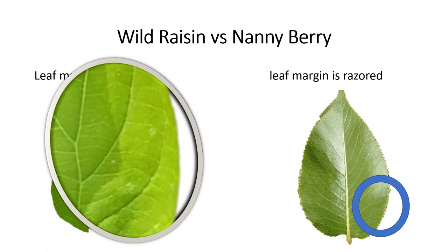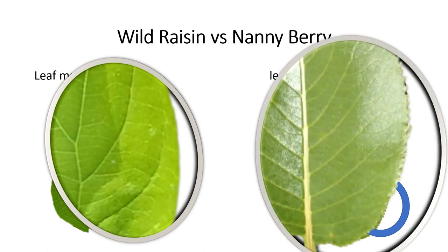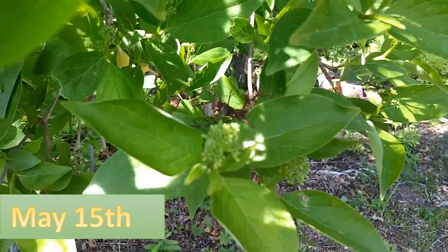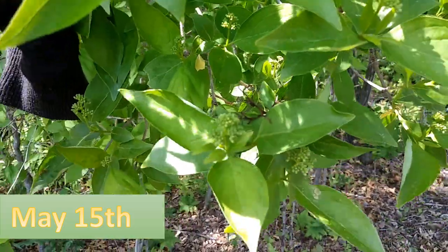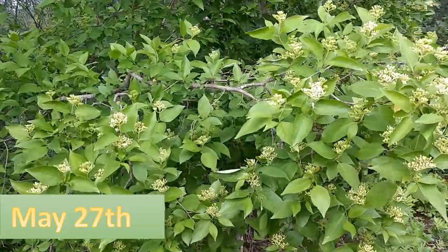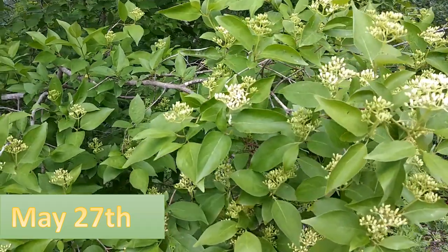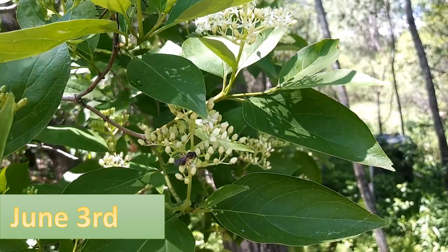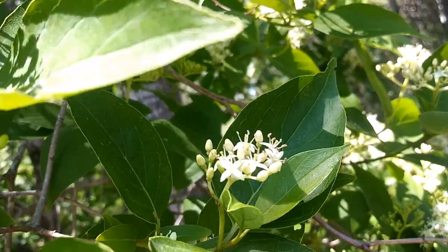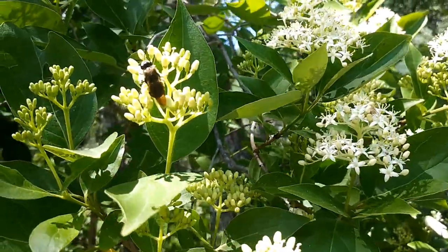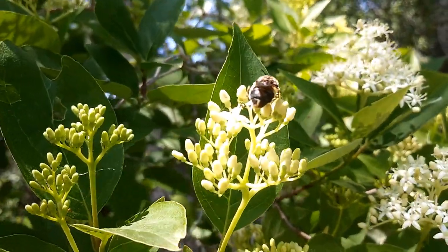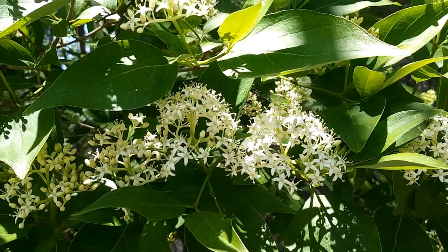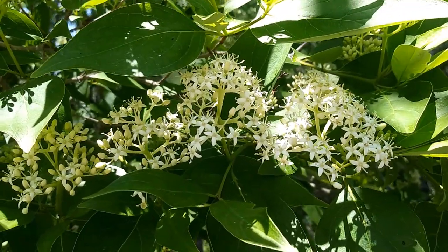By May 15th you'll see clusters of flowers growing. The flowers are really beautiful, and even if you're not going to eat the berries, keep the tree for the flowers. By late May to early June the flowers are blooming and it's one of the prettiest trees ever. You can see the four petals on the flowers as opposed to five petals on the nanny berry — that's a key confirmation this is a wild raisin.